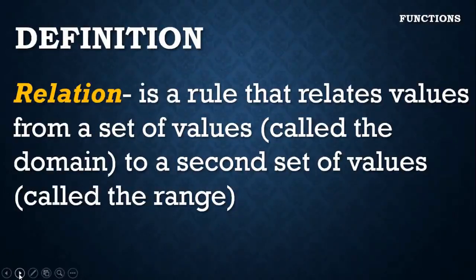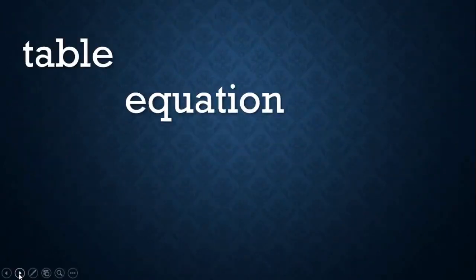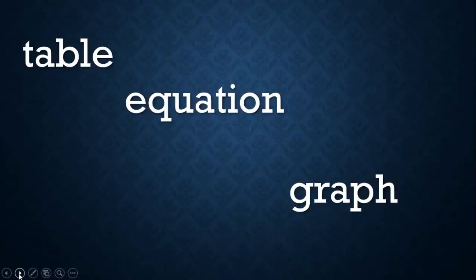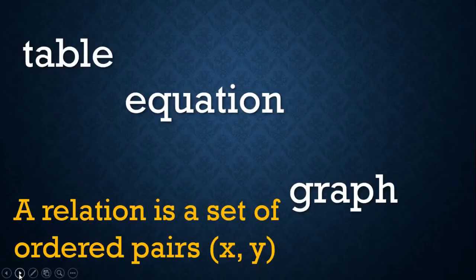How do we define the correspondence of these two values? It can be defined by a table, an equation, or a graph — to show that there truly is a correspondence between the two variables. This relation is a set of ordered pairs (x, y), where x is the domain and y is the range.